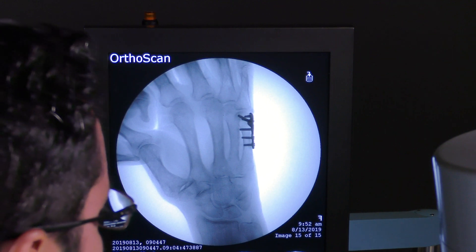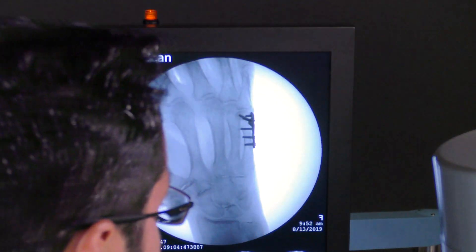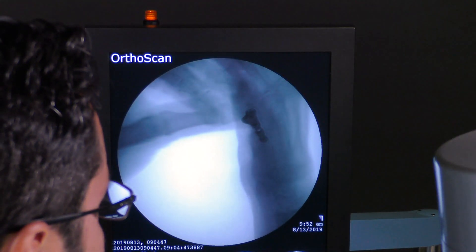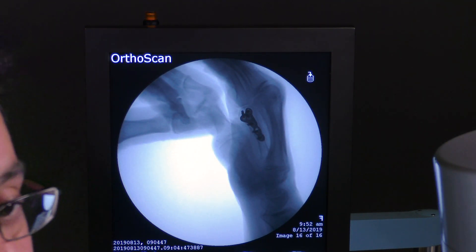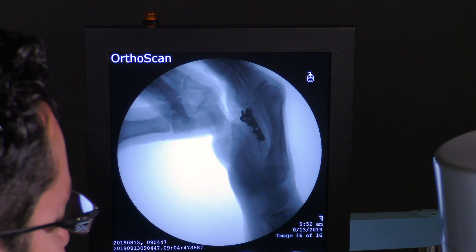So we did take that one screw that we used for the reduction screw. It doesn't serve a purpose anymore. And check out its position there as well. It looks great in terms of all screws in the head. No screws are bicortical.